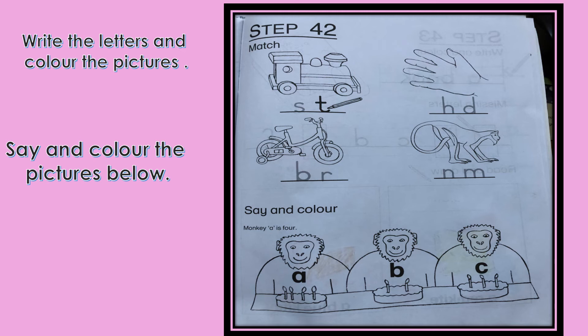Look at the first picture: a train. What is the first letter? T. Good job. Now next: hand. What is the first letter? H. Next: bike. What is the first letter? B. Good job.